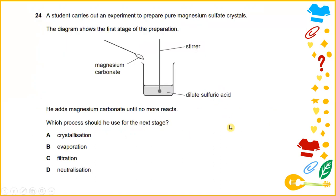The student carries out an experiment to prepare pure magnesium sulfate crystals. The diagram shows the first stage of the preparation. He adds magnesium carbonate until no more reacts. Which process should he use for the next stage? Refer to the method of purification, filtration and then crystallization and distillation. The answer would be filtration.